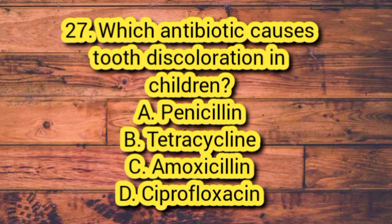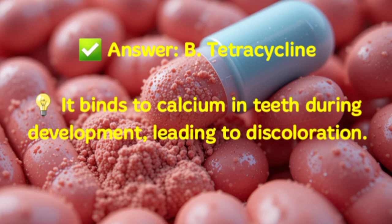Question 27. Which antibiotic causes tooth discoloration in children? A. Penicillin. B. Tetracycline. C. Amoxicillin. D. Ciprofloxacin. Answer: B. Tetracycline. It binds to calcium in teeth during development, leading to discoloration.